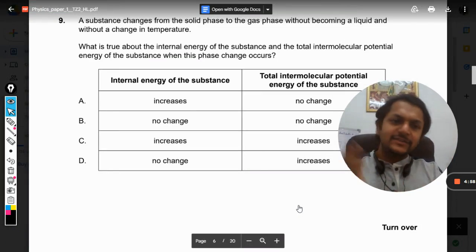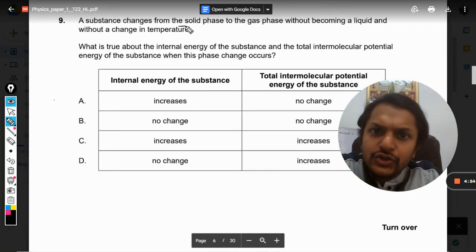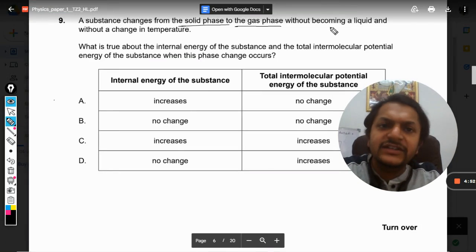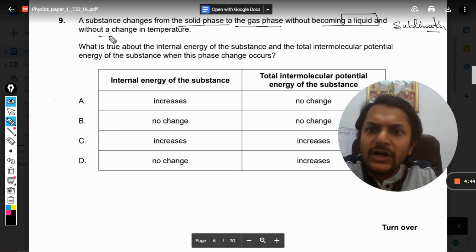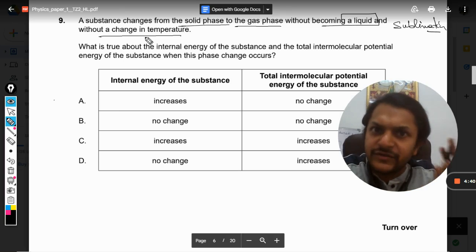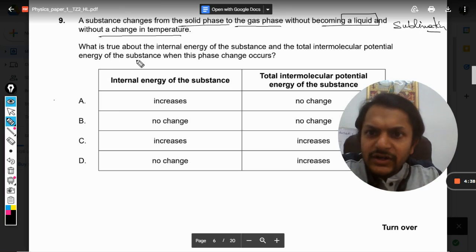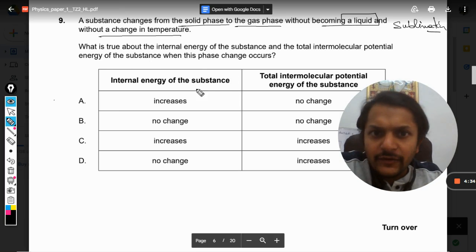So what is in this question? A substance changes from solid phase to gas phase without becoming liquid. The process is known as sublimation without a change in temperature. Whenever the phase is changing, there is no change in temperature. What is true about the internal energy of the substance?